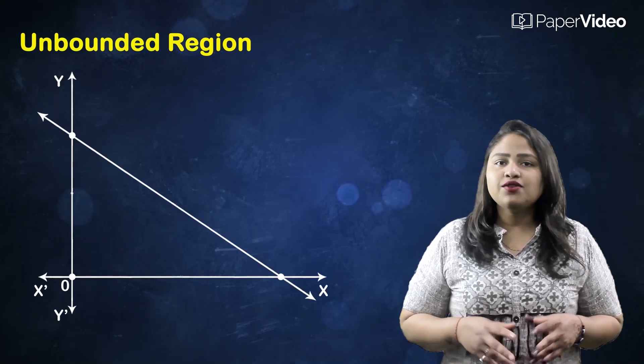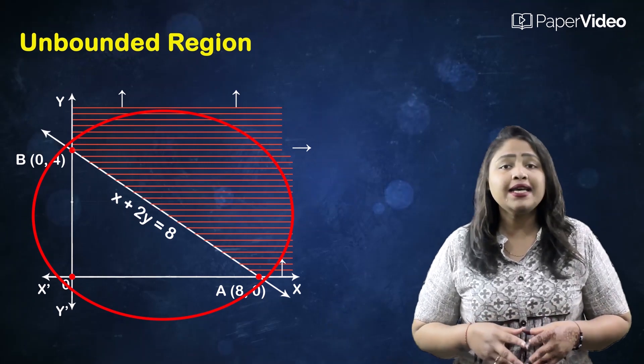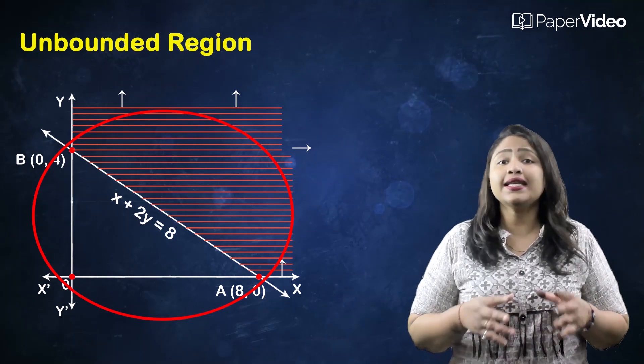Next is unbounded region. A feasible region of a system of linear inequalities is said to be unbounded if it can extend indefinitely in any direction.